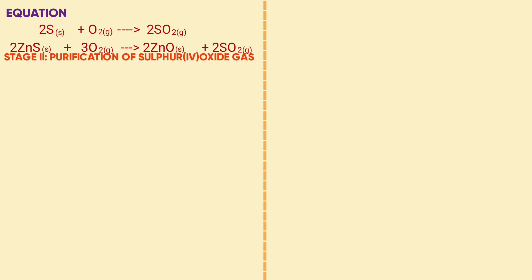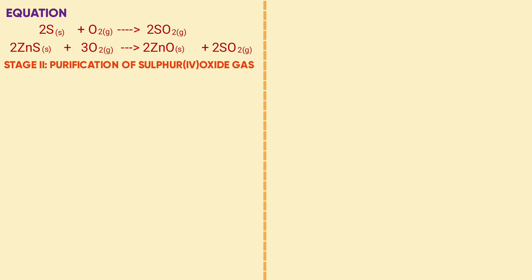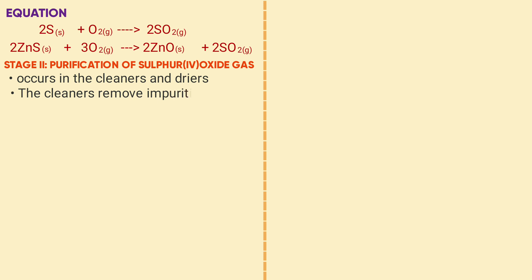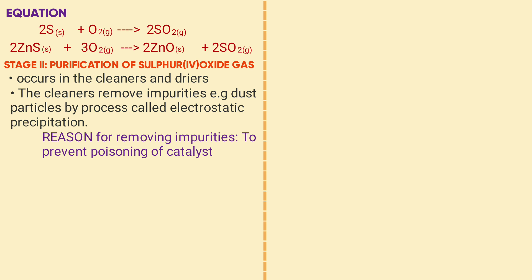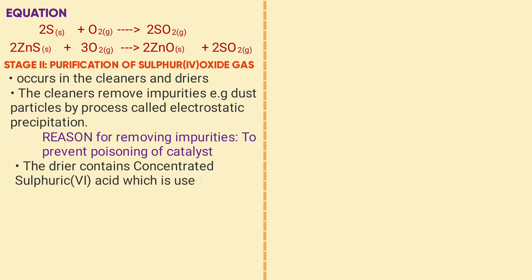Stage two is purification of sulfur dioxide gas, which occurs at the cleaners and dryers. The cleaner removes impurities, e.g. dust particles, by a process called electrostatic precipitation. The reason for removing impurities is to prevent poisoning of the catalyst. The gases mixture is then passed through the dryer, which contains concentrated sulfuric acid used to remove water vapor and dry the gases, because sulfur dioxide is highly soluble in water.